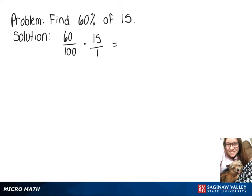When we multiply across the top, we'll get 900, and multiplying across the bottom gives us 100, which simplifies to 9.